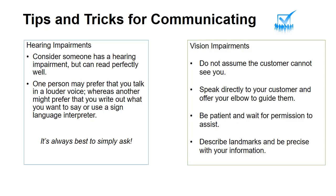Tips and tricks for communicating — Hearing impairments: Consider someone has a hearing impairment but can read perfectly well. One person may prefer that you talk in a louder voice, whereas another might prefer that you write out what you want to say or use a sign language interpreter. It's always best to simply ask. Vision impairments: Do not assume the customer cannot see you. Speak directly to your customer and offer your elbow to guide them. Be patient and wait for permission to assist. Describe landmarks and be precise with your information.